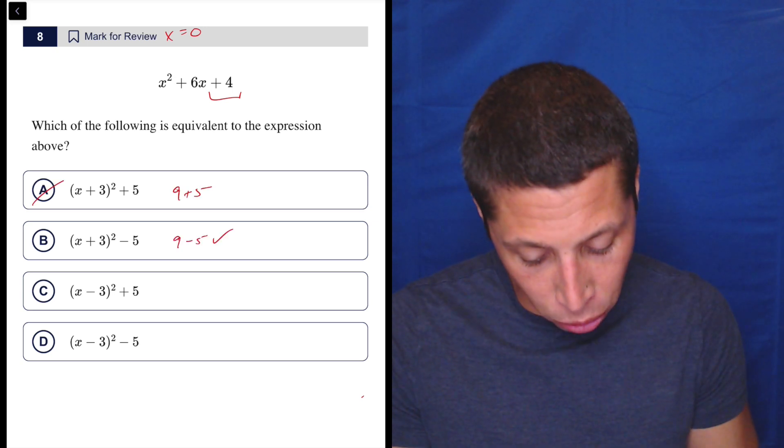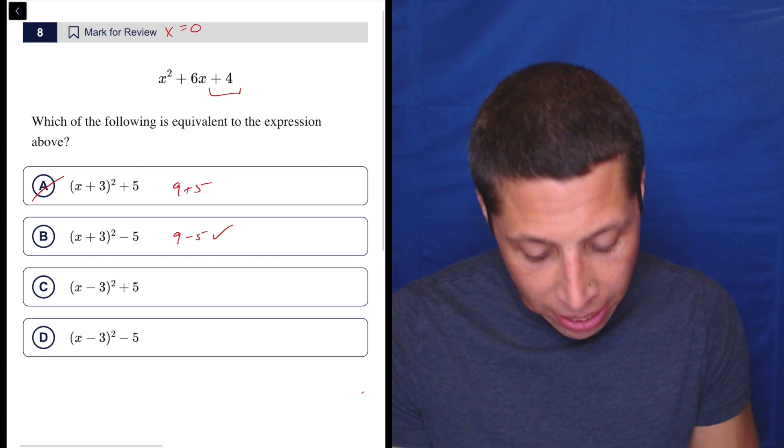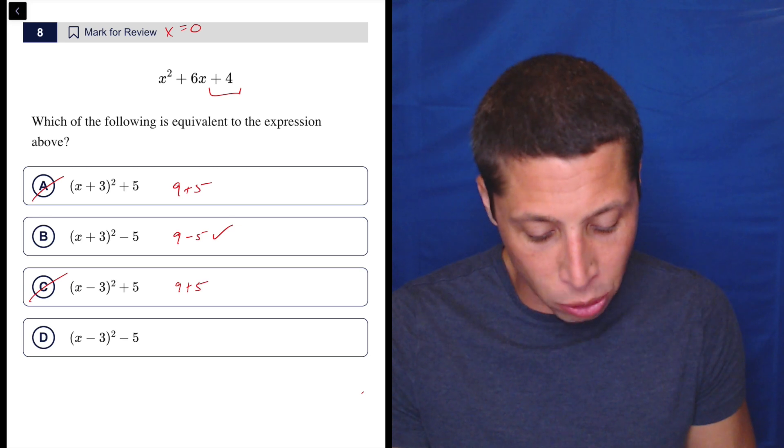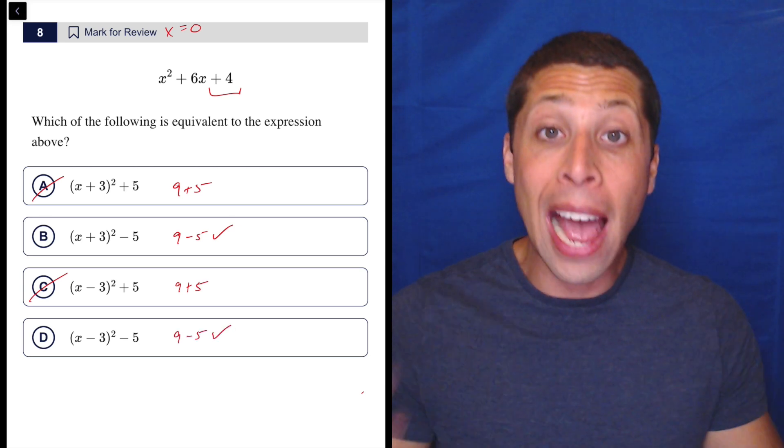Let's make sure we don't make a mistake here. So this would be a negative three squared. That's nine plus five. That also doesn't work, but here negative three squared is nine minus five also works. So this happens.